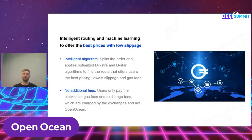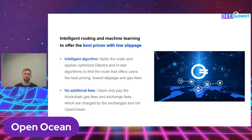If we look under the hood of the OpenOcean protocol, we have our own proprietary algorithms powered by machine learning and our public contracts that exist on the various platforms. The way it works is that our algorithm and public contracts go out to the different exchanges — both decentralized and centralized — and collect different price information and liquidity information, then optimize it for your trade.